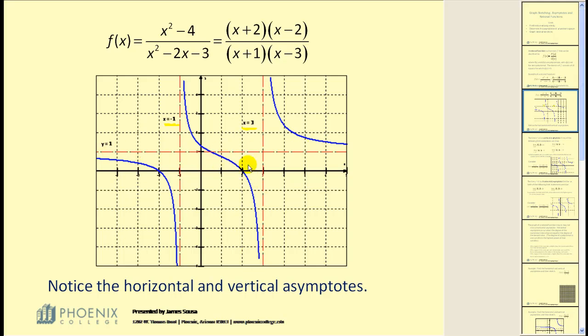This graph also has a horizontal asymptote at y = 1. A horizontal asymptote is a horizontal line that a graph approaches. It may or may not cross a horizontal asymptote.